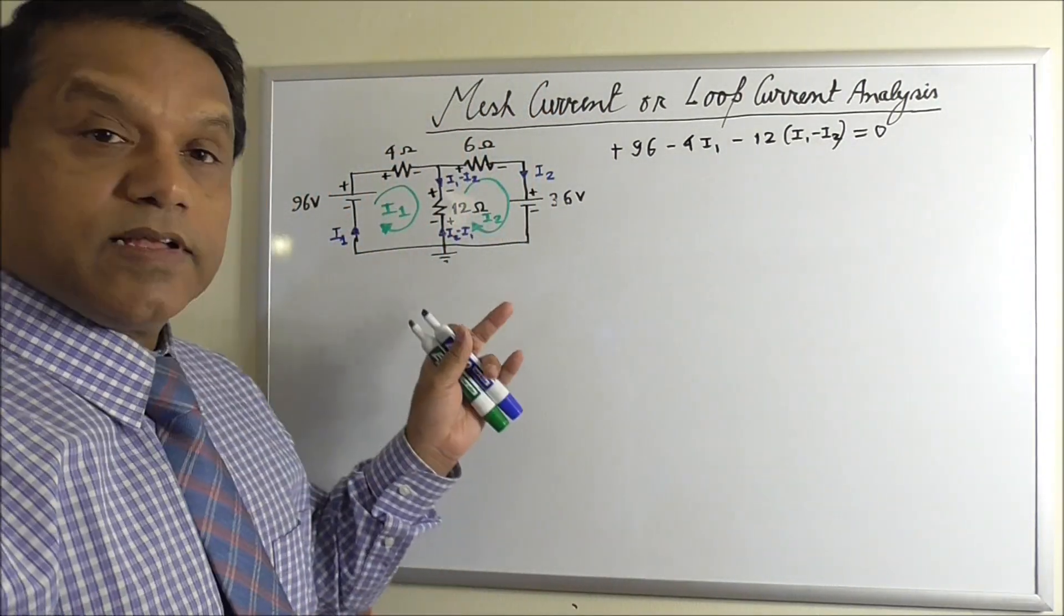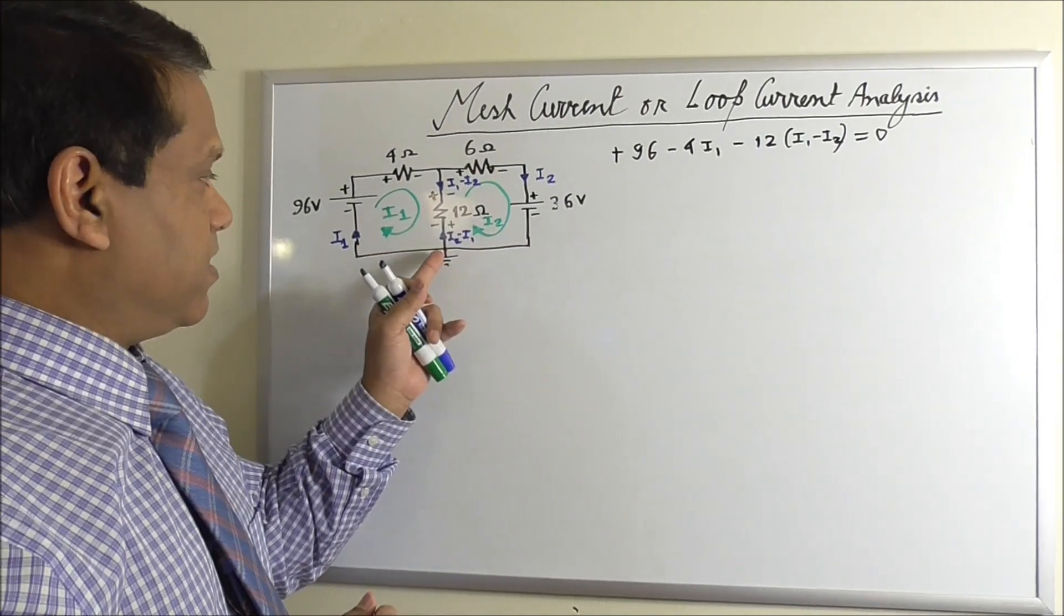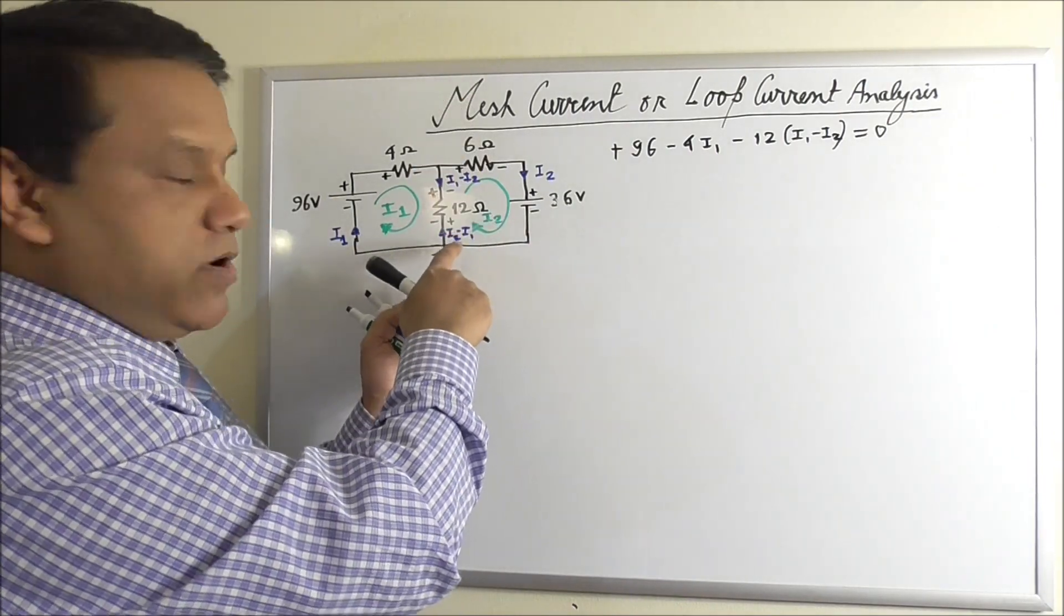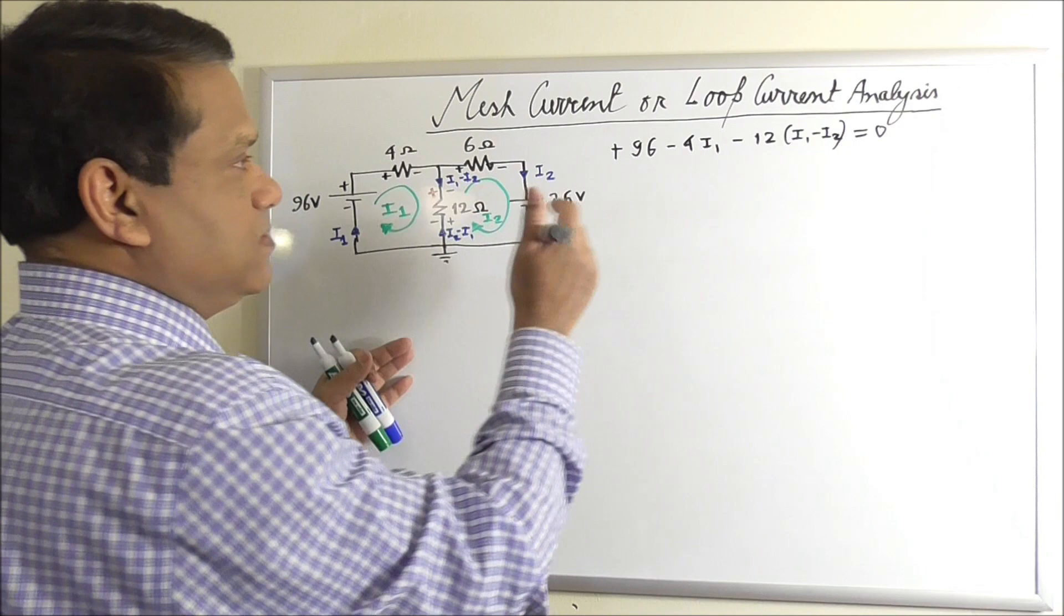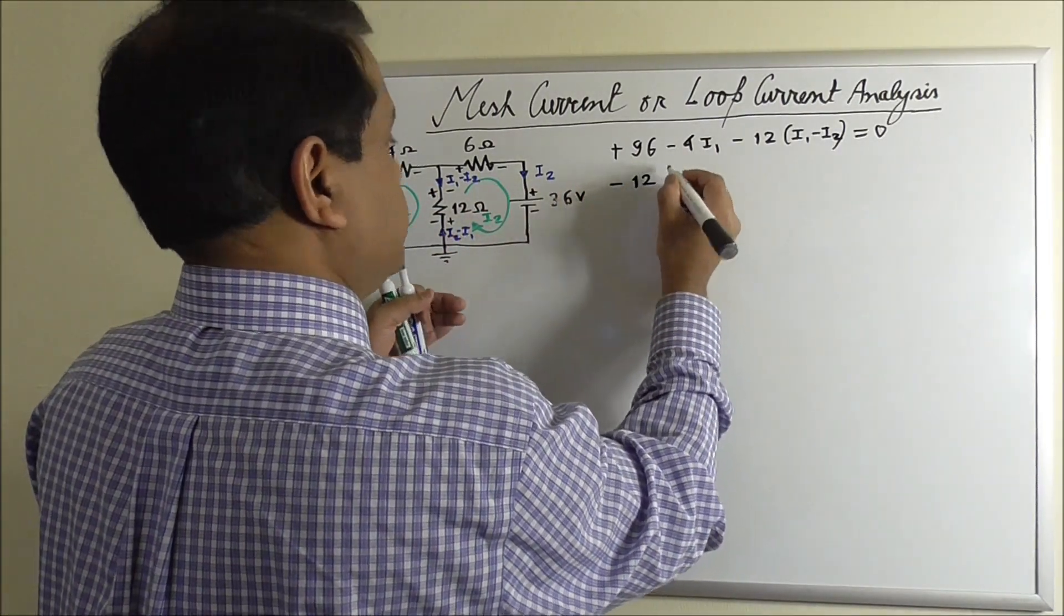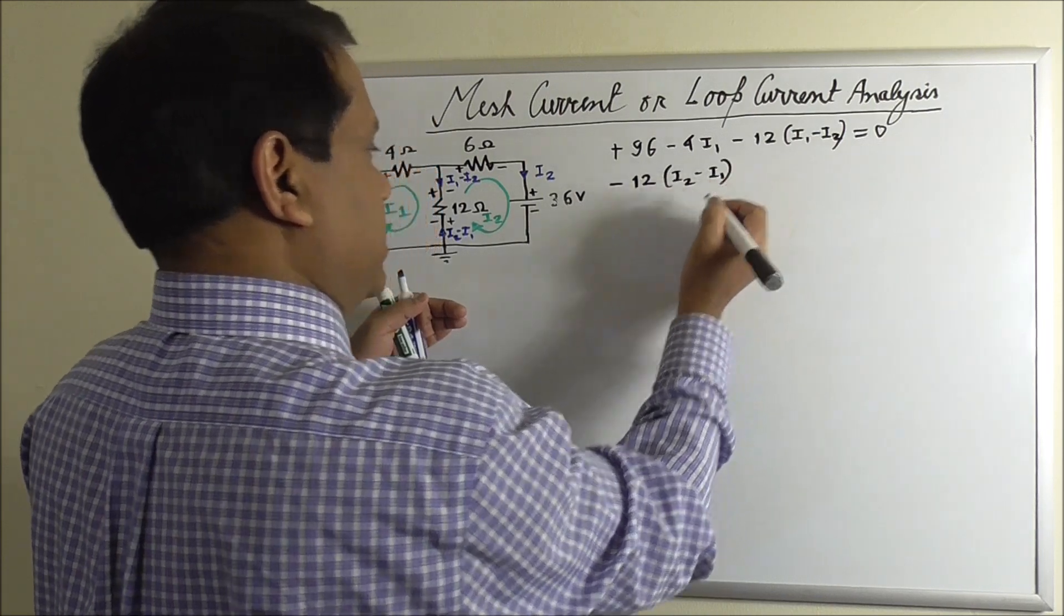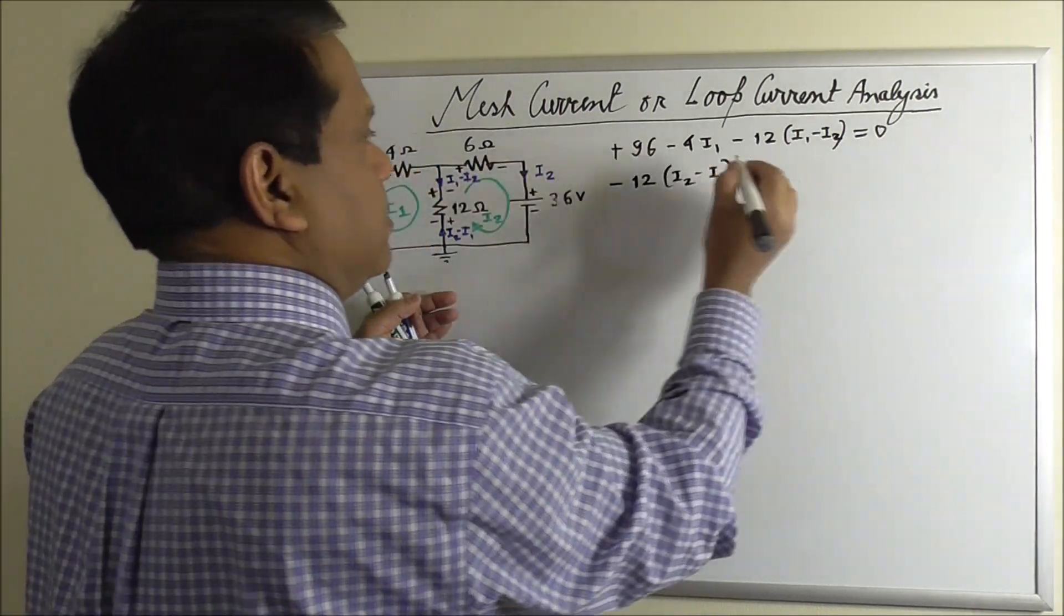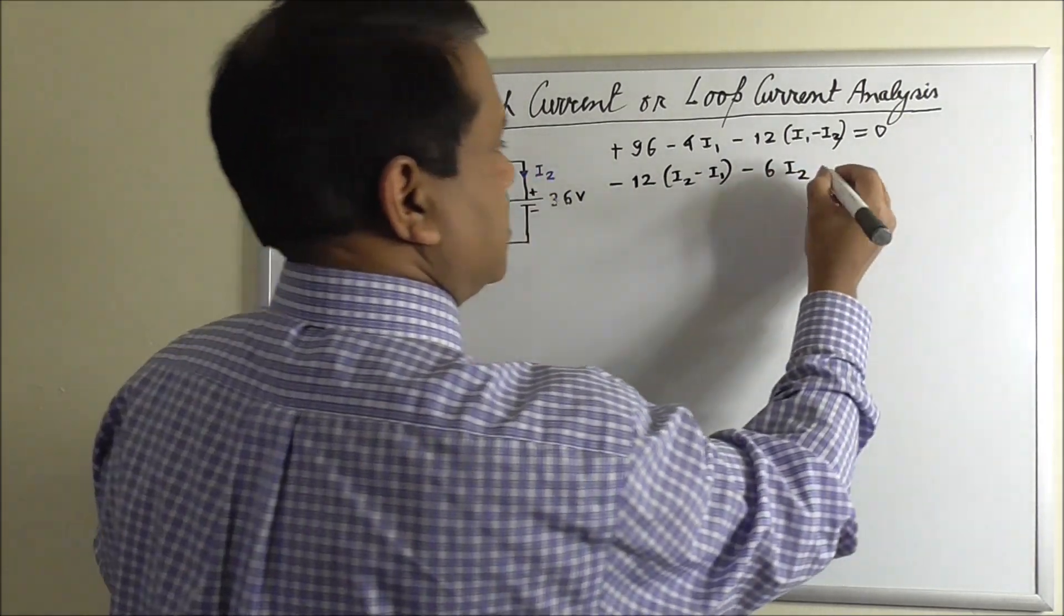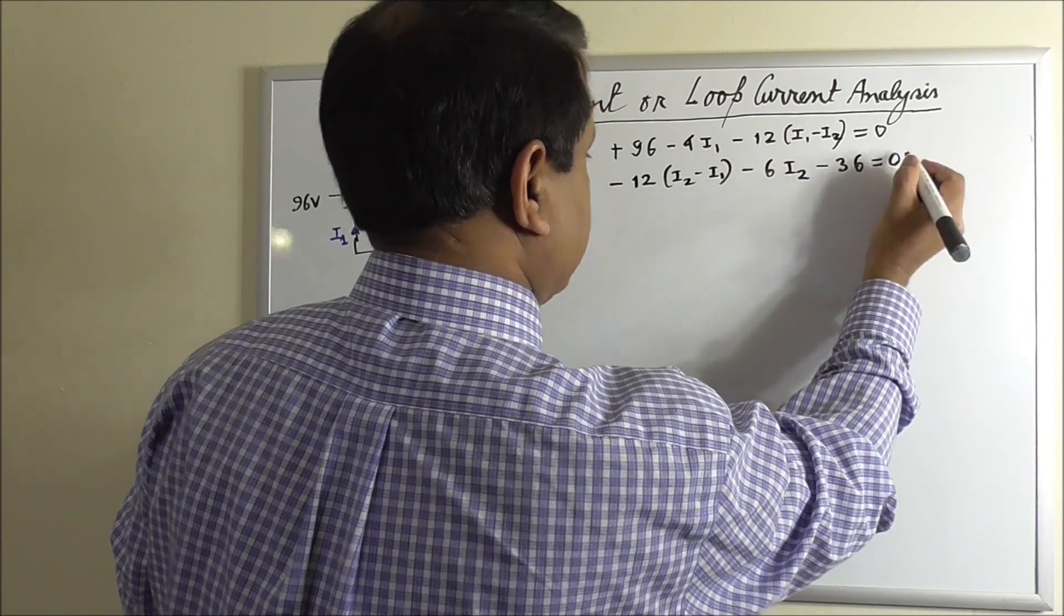And the equation for this loop is, starting from here, going upward. Let us assume current is upward, I2 minus I1. So we'll consider this plus and minus sign. So minus 12 (I2 minus I1) minus 6 I2 minus 36 equals 0.